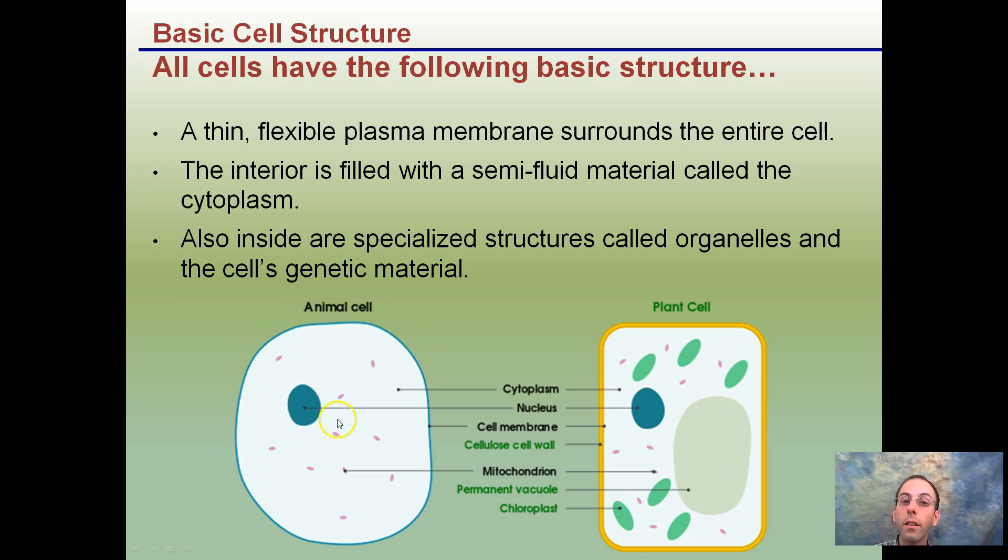The interior, the inside, is filled with semi-fluid material called cytoplasm and that's true for both cell types here. Inside are specialized structures called organelles and also the cell's genetic material. There's these organelles in eukaryotes and they are specialized structures that occur in the cells.